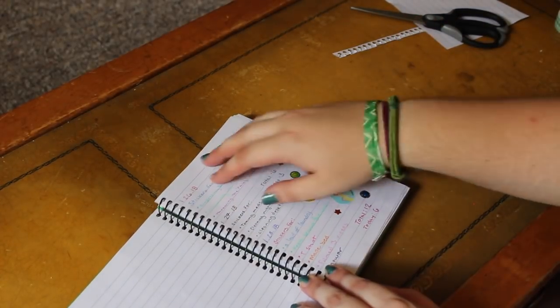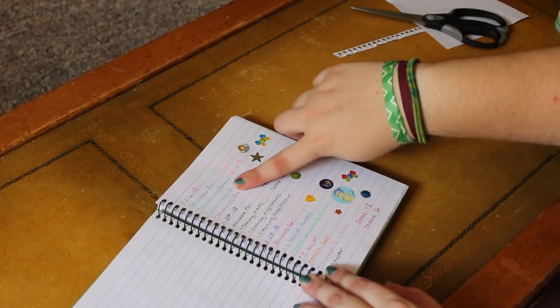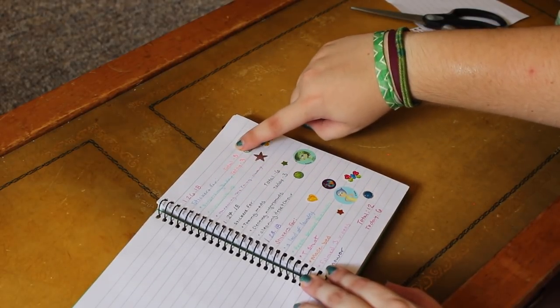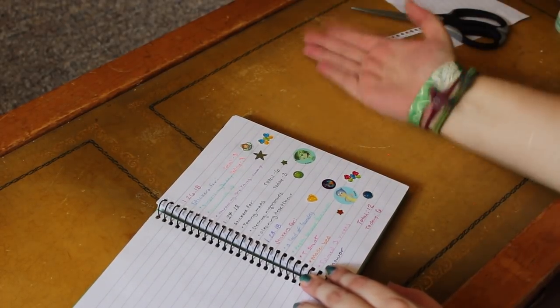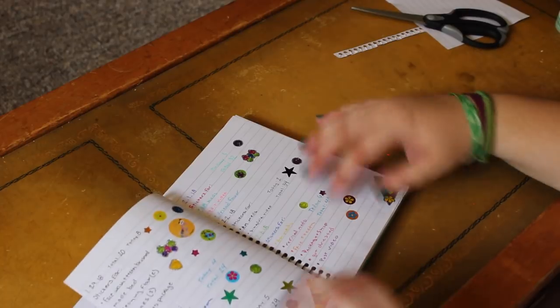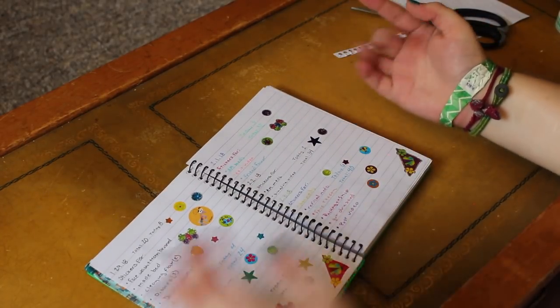And after that, it just starts with my sticker chart. So I write down the date, the things that I earned stickers for, the total amount of stickers overall, and the amount of stickers that I got today. And then, of course, the fun part comes with putting the stickers on the notebook. And you can use whatever stickers you like.